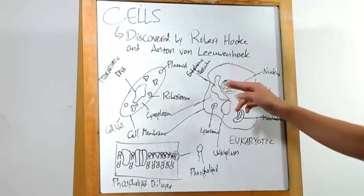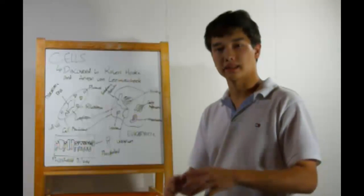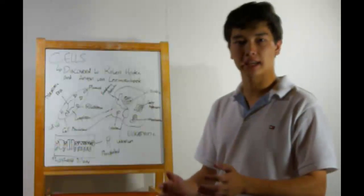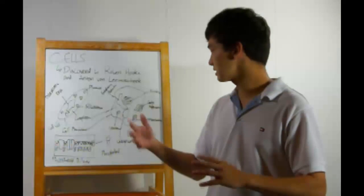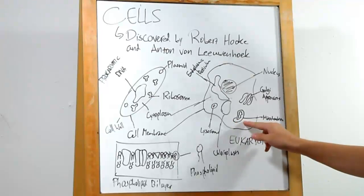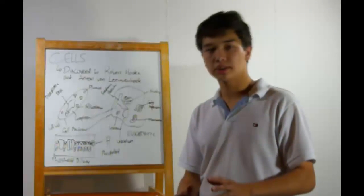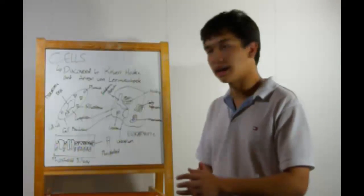Whenever the ER produces something, it usually goes to the Golgi apparatus. The Golgi apparatus packages these substances in vacuoles, bits of membrane kind of like plastic wrap, and then sends them to wherever they're needed, either inside the cell or out. Other organelles include the mitochondria. Mitochondria produce energy from sugar. All eukaryotic cells have these.